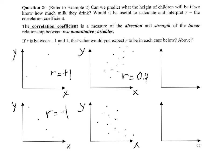Here's a negative relationship. I can imagine putting a line through those points to approximate the data, but that line would be going down and missing many of those points, so r wouldn't be strong. The strongest r could be would be negative 1, so I'm going to say this r is something like negative 0.5.